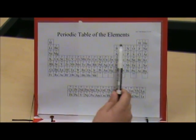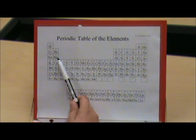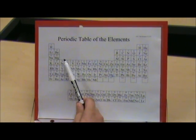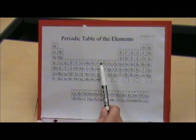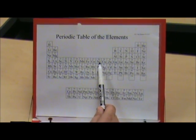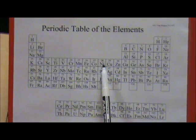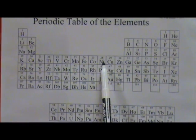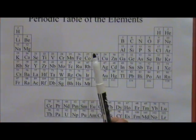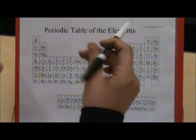1s2, 2s2, 2p6, 3s2, 3p6, 4s2, 3d8. Is that iron? No, it's nickel. Oh, that's right. Okay. Is that a hit or a miss? That's a miss. Aw.